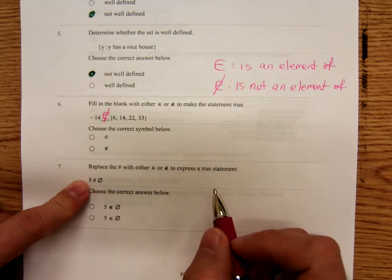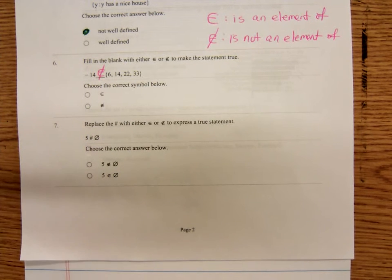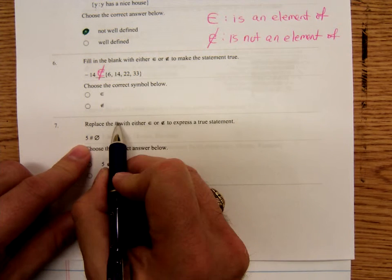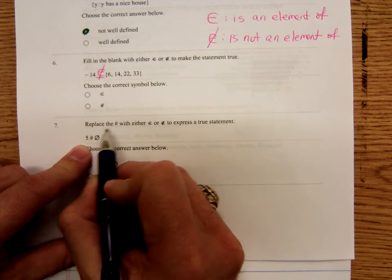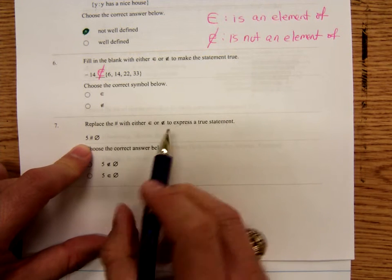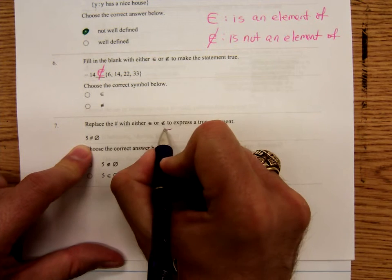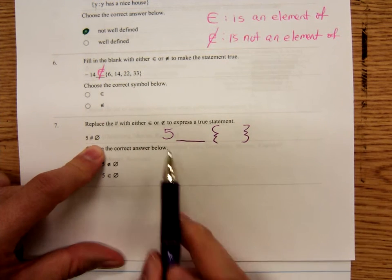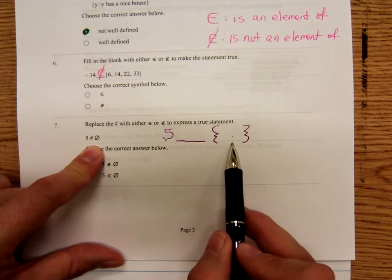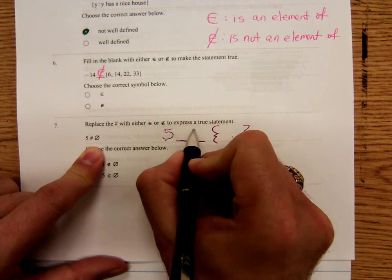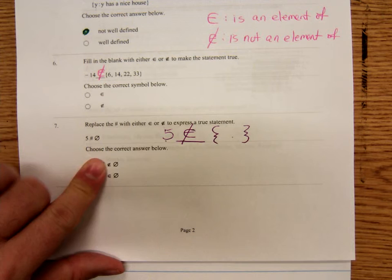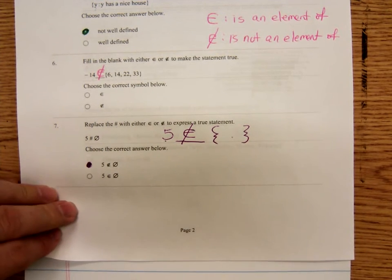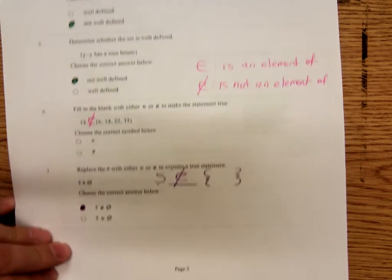Number seven. Same type of problem. It's worded slightly different. It says replace the hashtag or pound symbol or number symbol, whatever you want to call it, with the element or not an element symbol. Five and then this little circle with the slash is the empty set. Is five right here in this set? Well, no, there's nothing in the empty set. So this is, is not an element of.